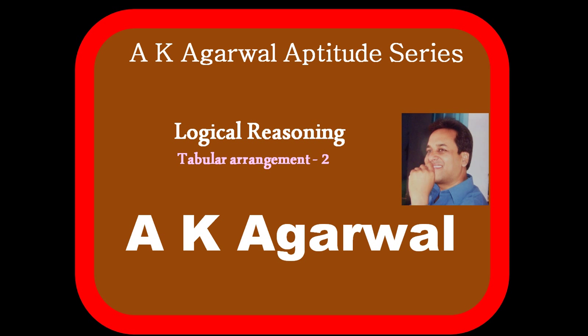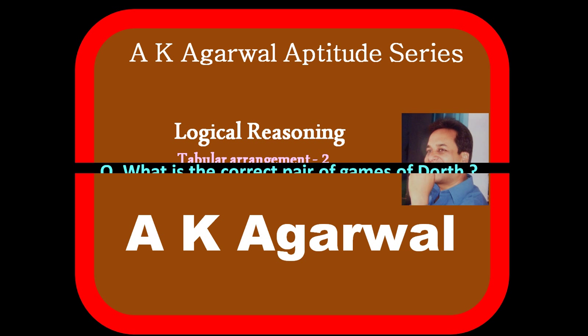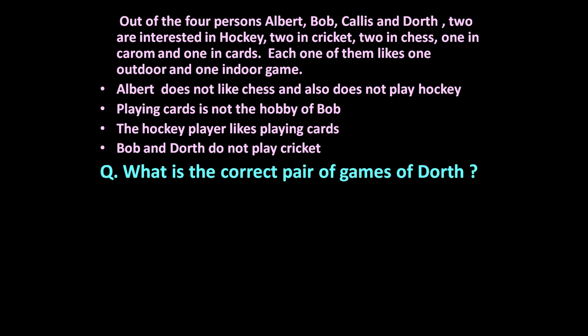Hello friends, and welcome to AK Agrawal Aptitude Series. In this session we are going to learn a technique for solving a problem on logical reasoning. The given problem is: out of four persons — Albert, Bob, Kallis, and Dorth — two are interested in hockey, two in cricket, two in chess, one in carom, and one in cards.